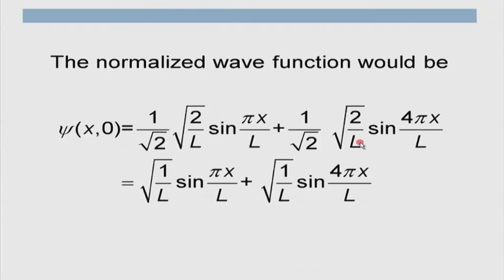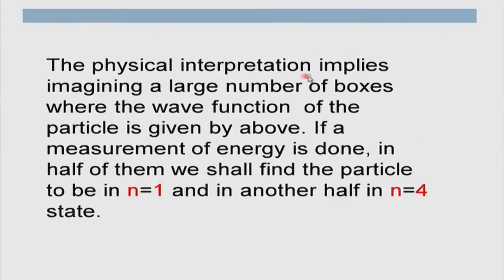If a measurement of energy is made, the probability of finding the particle in energy state E₁ is (1/√2)² = 1/2, and similarly the probability of finding it in E₄ is 1/2. So there is equal probability of finding the particle in n = 1 as in n = 4. The physical interpretation: imagine a large number of boxes with the particle having this wave function. In half of the boxes we find energy E₁, and in the other half E₄.